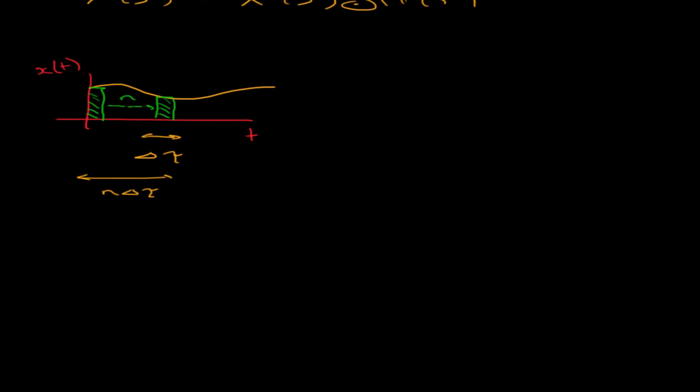The entire time it takes to reach this pulse is n delta tau. What about the value of the pulse? The value of the pulse will be x of n delta tau. What about the area? The area of a single pulse will be its height, which is x n delta tau, times its width, which is delta tau. That gives us the area.